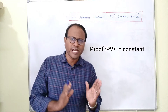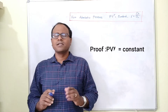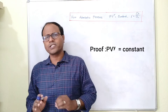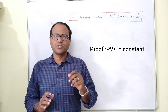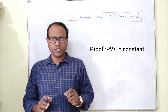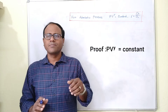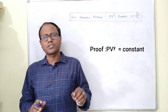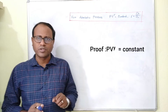Class 11 — we have done thermodynamics, and today we are continuing with thermodynamics. This is PV to the power of gamma is equal to constant. This is the adiabatic process equation.